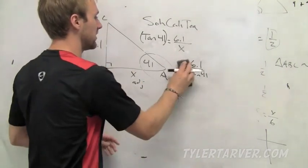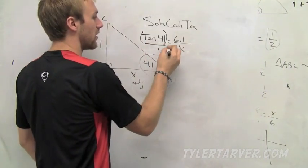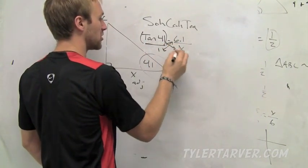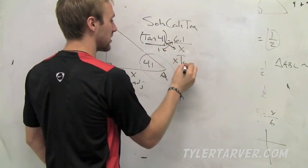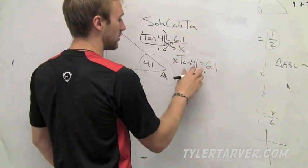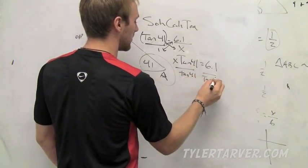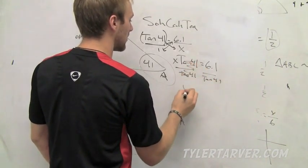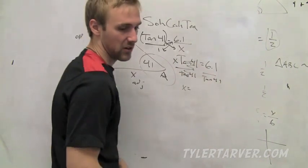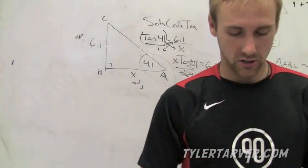The official way, like the reason you can do this, you can always put this over 1, cross multiply, which would be X times tangent 41 equals, and then 6.1 times 1 equals 6.1. And then you would divide tangent of 41 on both sides. And then when you type into your calculator, if you're in degree mode like you're supposed to, so make sure you're in degree mode, you are good.